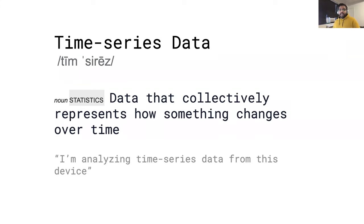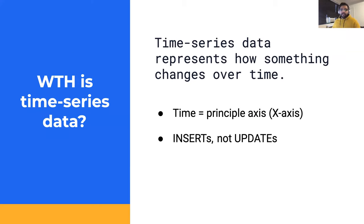When we think of Time Series data, we capture all the data associated with that system or object rather than overwriting previous data. That allows us to get data that collectively represents it. We also associate each data point with a timestamp. That leads to two defining characteristics: first, time is the principal axis — the x-axis or independent variable. Second, Time Series data is inserts and not updates, so we insert each new observation as a new data point.